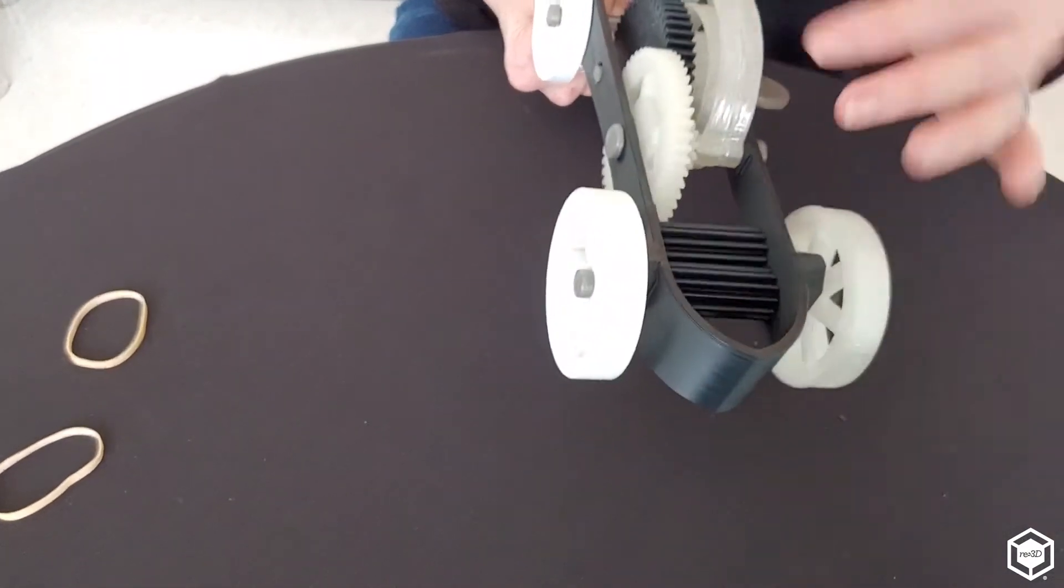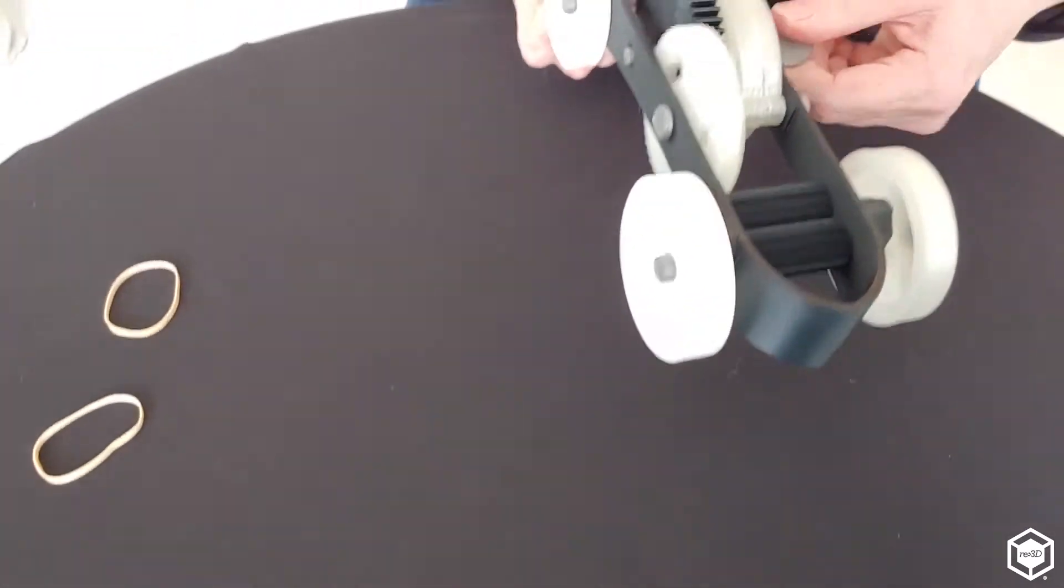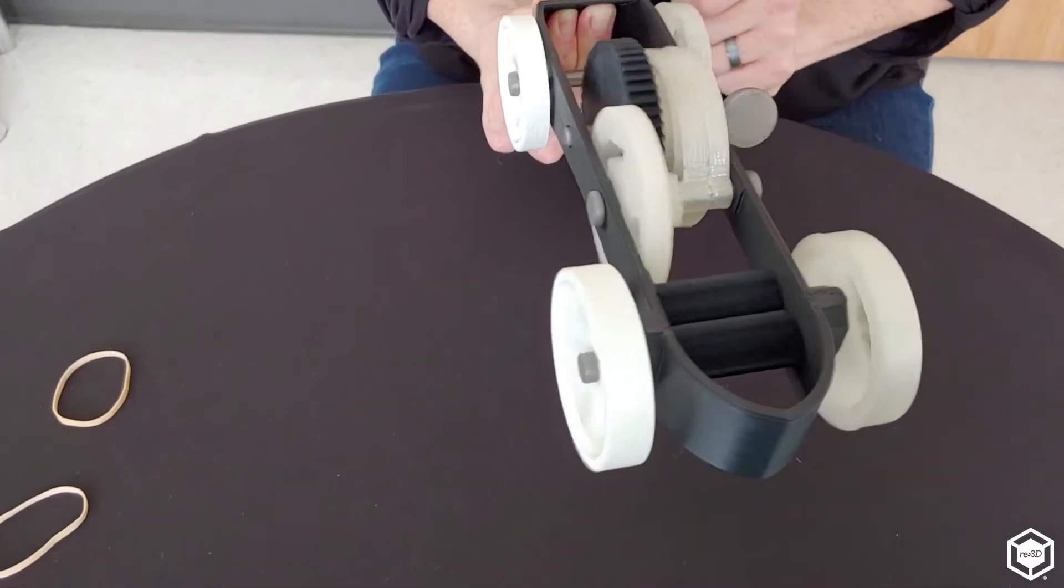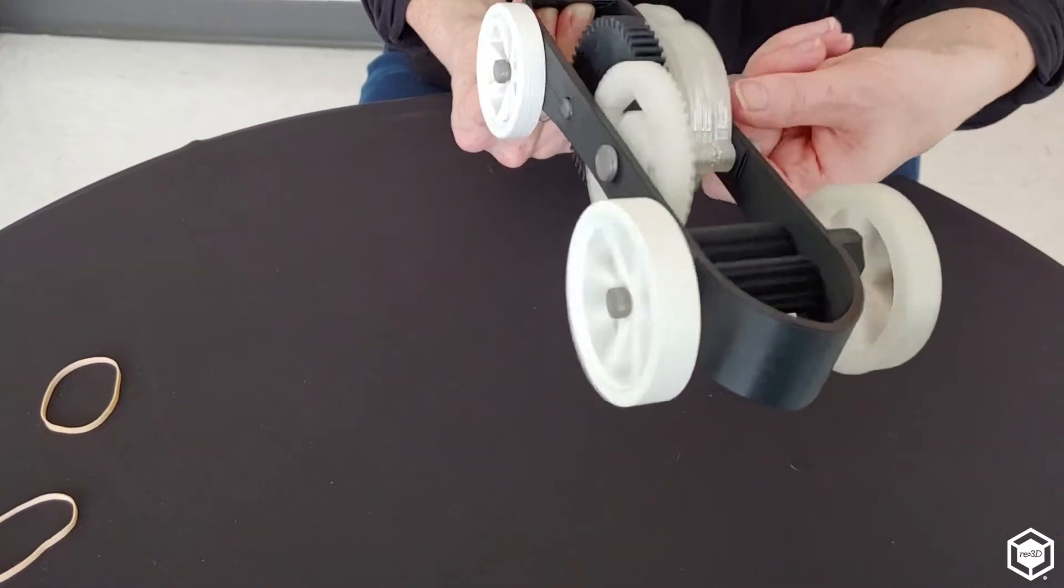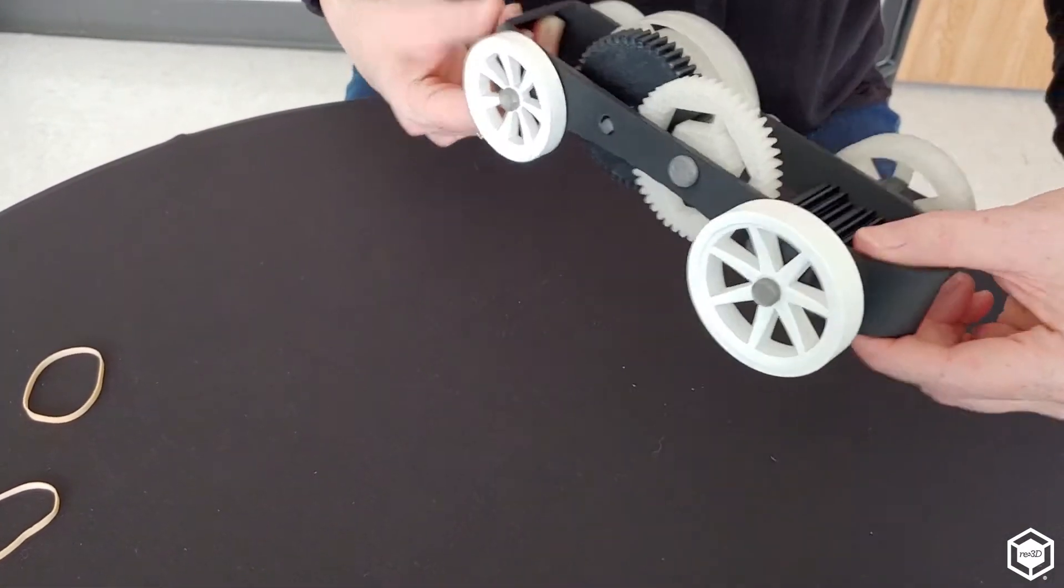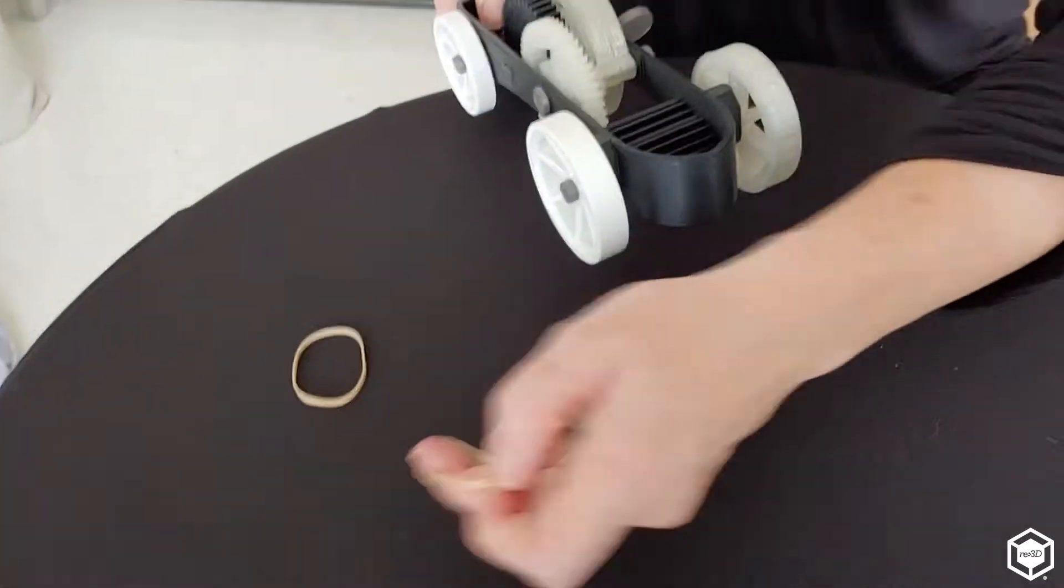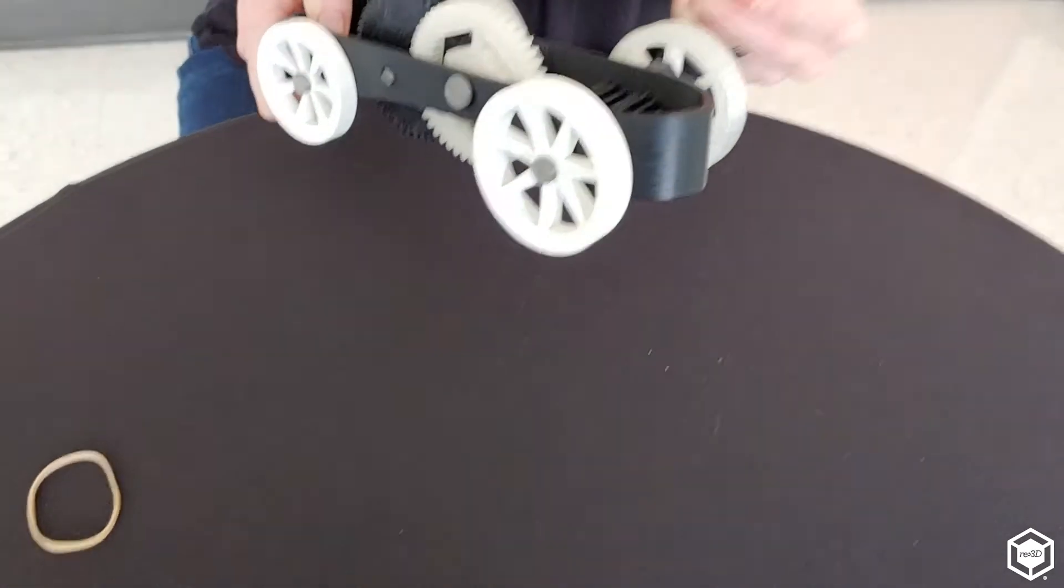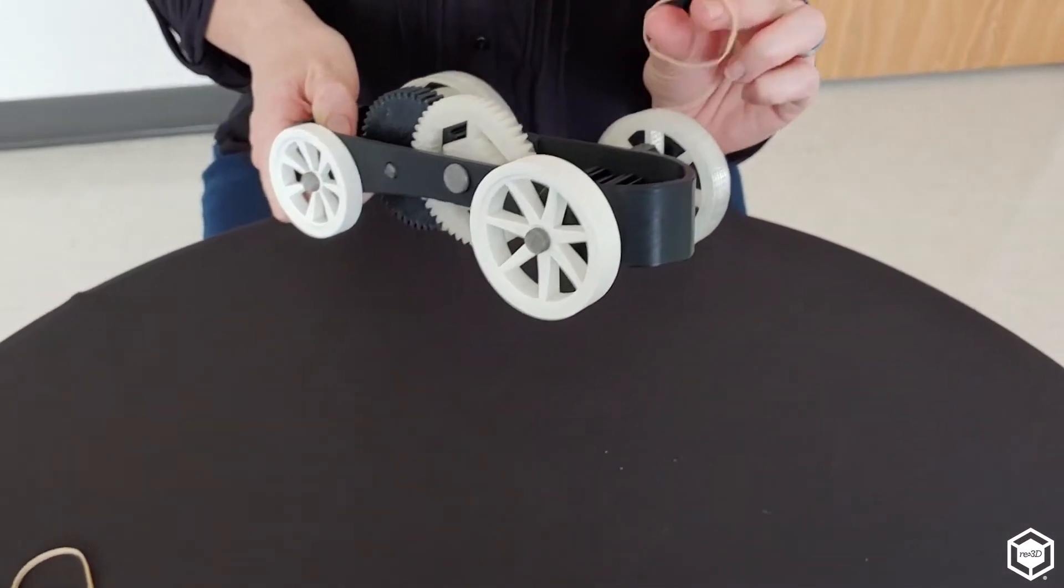Now I just want to make sure that everything operates pretty freely. When I wind up, you're turning that spring into energy for the gears. The last thing I'm going to do is take two rubber bands and wrap them around the rear wheels to give it a little traction.